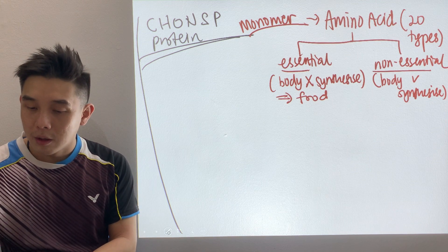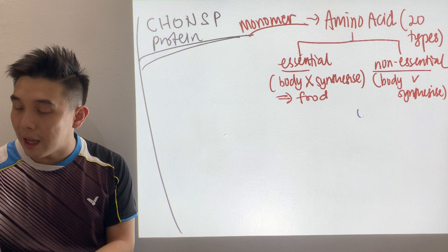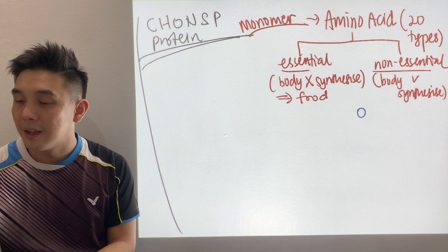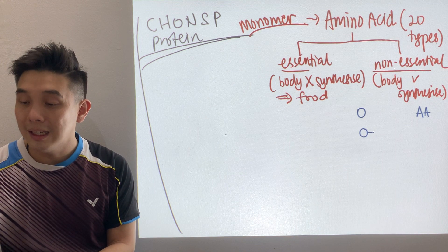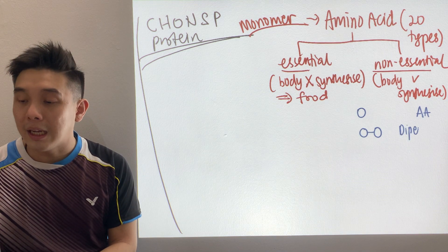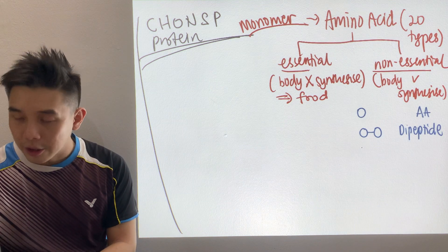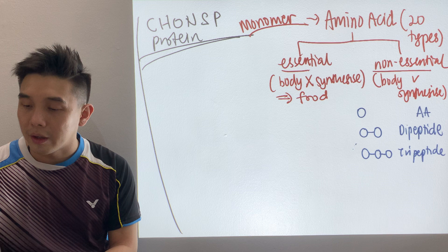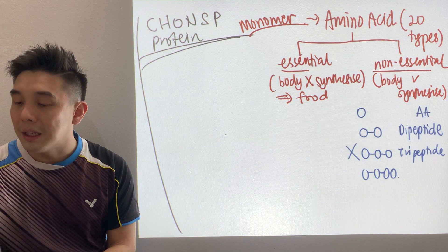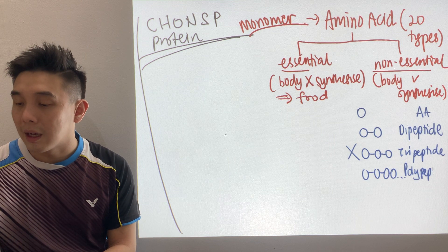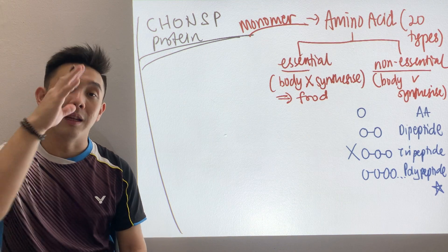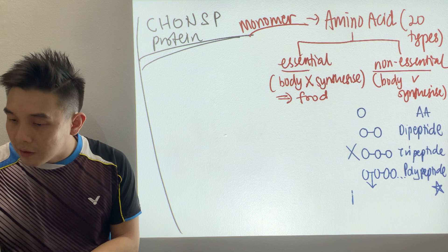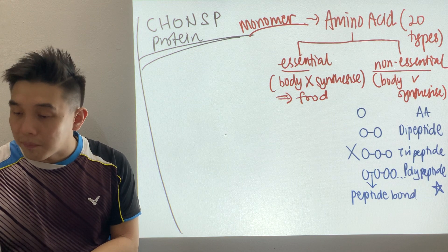Now, let's say this is one amino acid. If there are two, we call it a dipeptide. Three — tripeptide. But you don't need to know tripeptide as it's not in the syllabus. If there are four or more, then it's a polypeptide. This is a very important word — we need it for the four structures. And between amino acids, the bond is called a peptide bond, or 'ikatan peptida'.